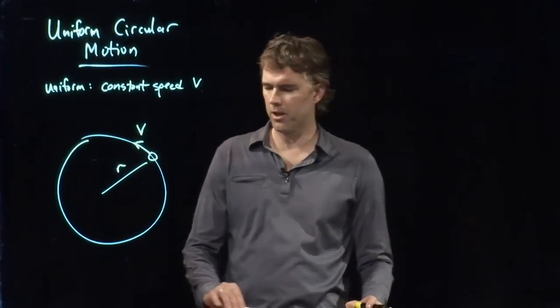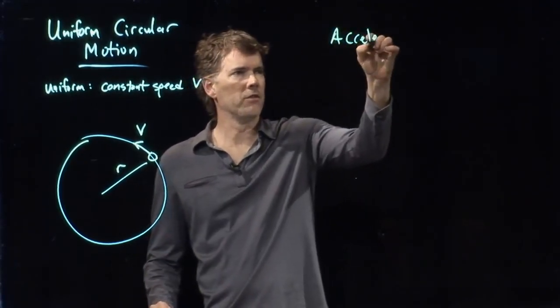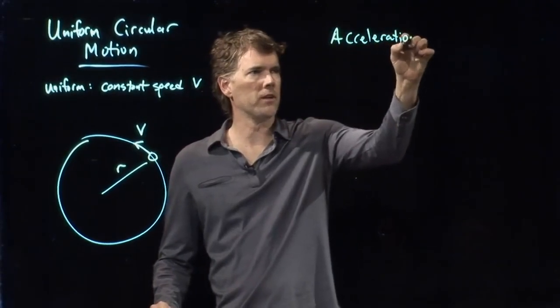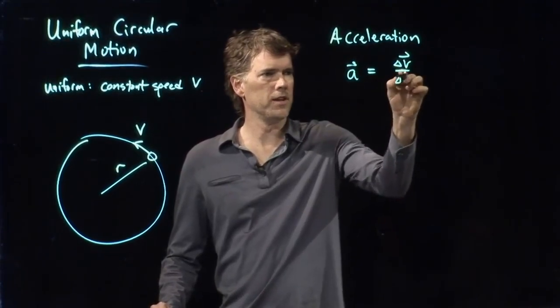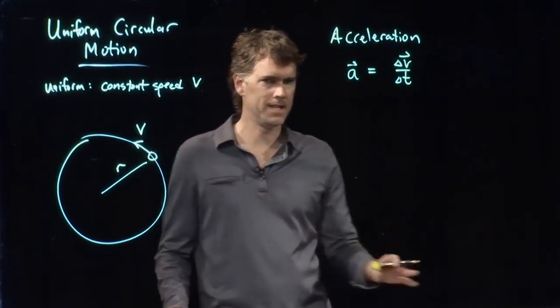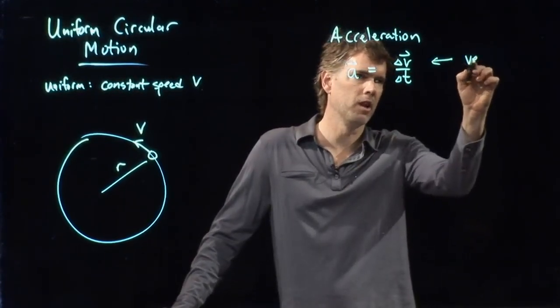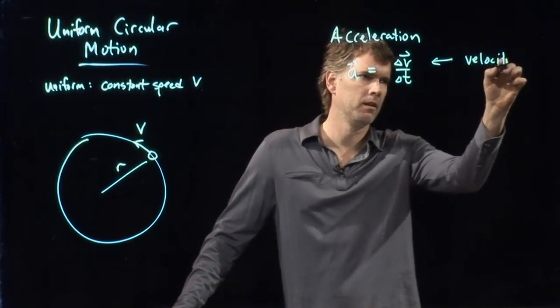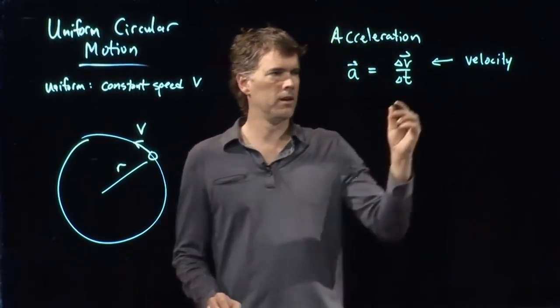We just said that we think we are accelerating. And we can probably convince ourselves pretty quickly that that is true because acceleration is delta v over delta t. And delta v is the change in velocity. Is velocity a vector or a scalar? It's a vector.